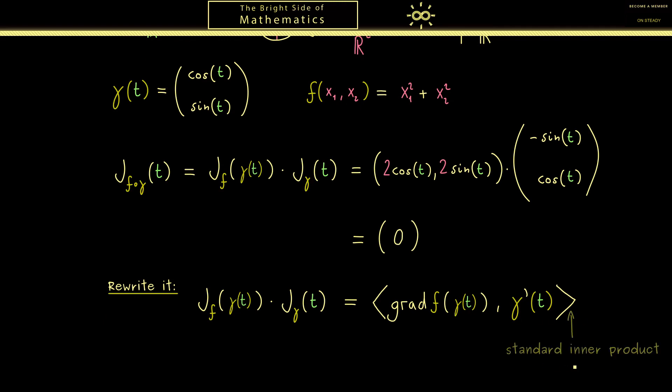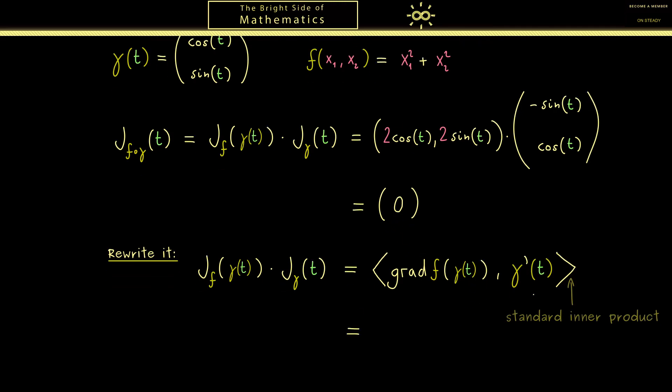However now the important thing is that in this case in this example this inner product gives us 0. In fact this is something you should know from linear algebra if the inner product is 0 we have orthogonality. In other words here both vectors are perpendicular.